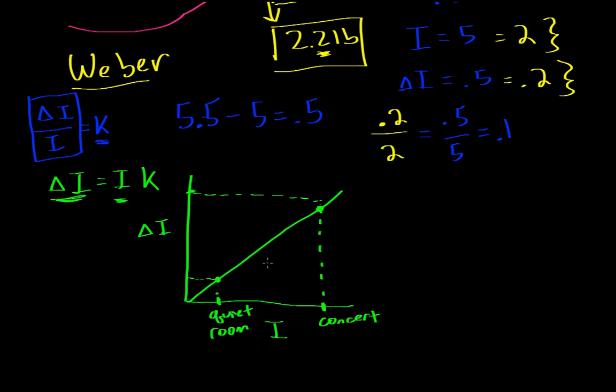In the real world, sometimes people add a different constant to the equation, so you get delta I over I equals K plus an additional constant. This modification accounts for the baseline level of activity that needs to be surpassed in real-world situations, allowing the equation to more accurately represent what actually goes on.